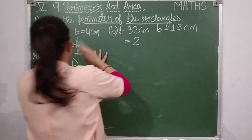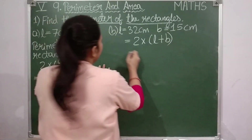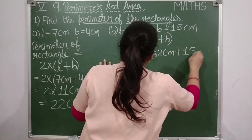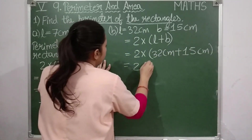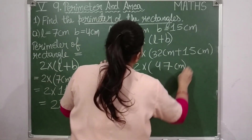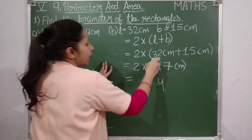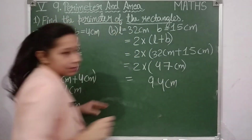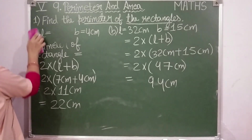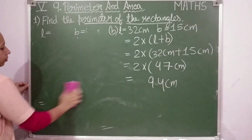Next point: write the formula in full — two into (l plus b). Here, two into (32 cm plus 15 cm). Adding: thirty-two plus fifteen equals forty-seven centimeters. Then two into forty-seven: two sevens are fourteen, carry one; two fours are eight, plus one is nine. So ninety-four centimeters is the answer.